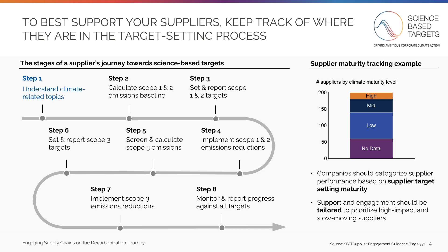The steps suppliers will take are as follows: first, understanding climate-related topics; second, calculating baseline scope 1 and 2 emissions; third, setting and reporting scope 1 and 2 targets; fourth, implementing scope 1 and 2 emissions reductions; fifth, screening for and calculating scope 3 emissions; sixth, setting and reporting on scope 3 targets; seventh, implementing scope 3 emissions reductions; and finally, monitoring and reporting progress against all targets.